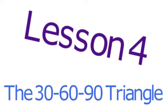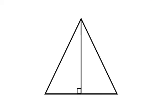Lesson 4: The 30-60-90 Triangle. In geometry, you learn that when you bisect an equilateral triangle vertically, the result is a pair of identical right triangles.